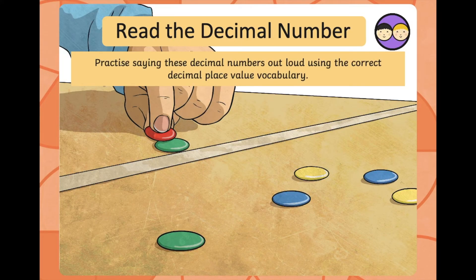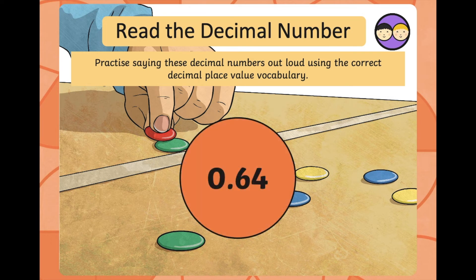Practice saying these decimal numbers out loud using the correct decimal place vocabulary. I'm going to show the number on the screen, give you a moment to say the number, and then I'll say it to check you got it correct. Well done if you said 0.64 — actually it's not said as 'nought point sixty-four'. There is a reason for that, and I'll explain it a little bit more when we get to a number with three decimal places.